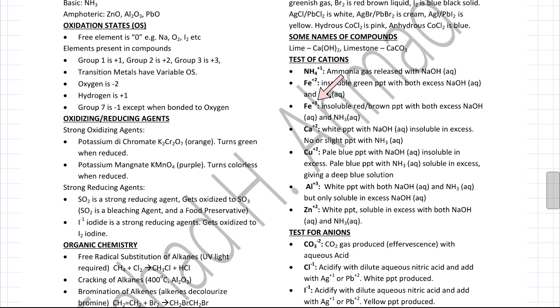So Fe3+ is going to produce a red-brown precipitate with either NaOH or NH3.